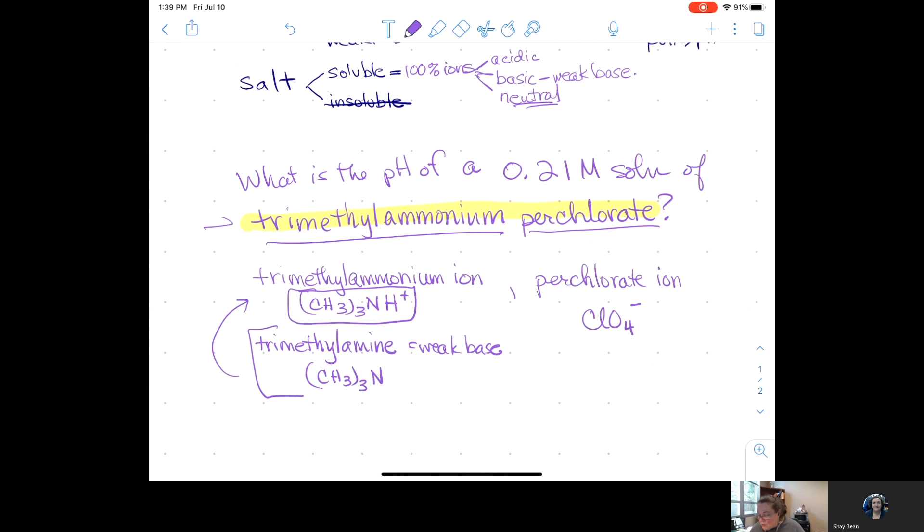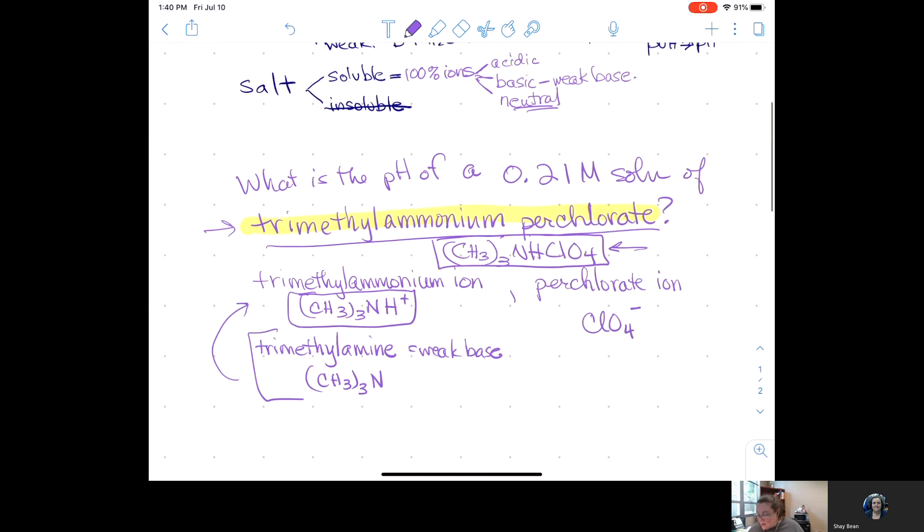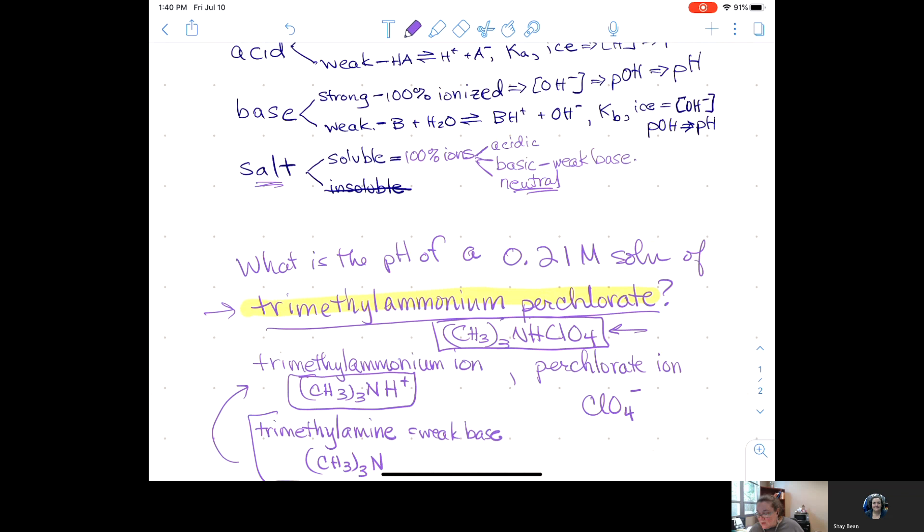So, trimethylammonium perchlorate is (CH3)3NH ClO4. I don't write any plus or minus signs anymore once I put the two ions together. And again, if you Google trimethylammonium perchlorate, you're going to see something like what's here in the box that doesn't tell you anything unless you know how to deconstruct it. So, I've got my two ions. And recall from our flow chart, once you've got a salt, you break it up 100% into ions. And for each ion, decide whether that ion is acidic, basic, or neutral.